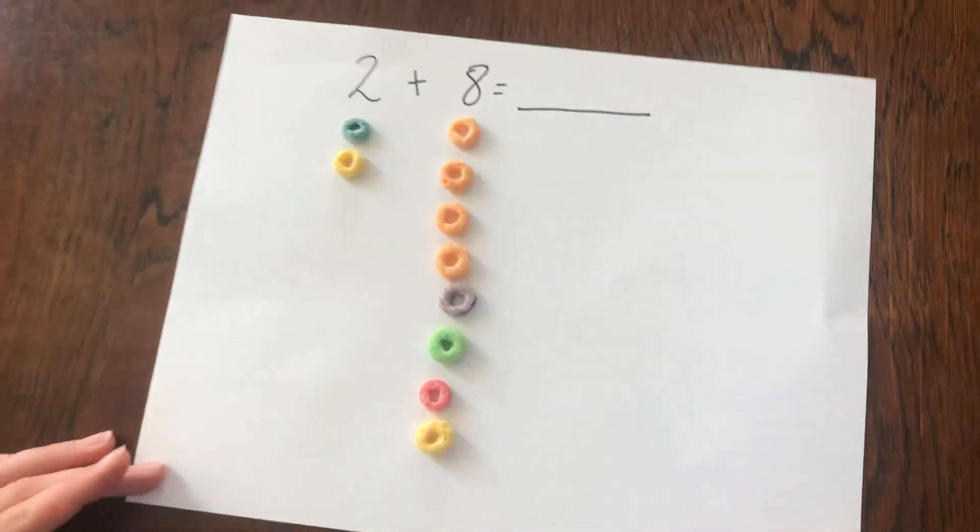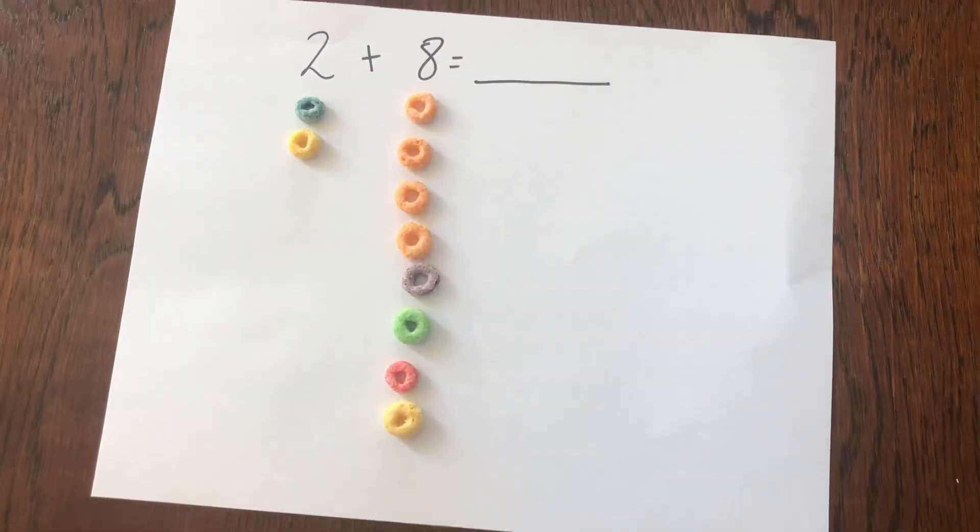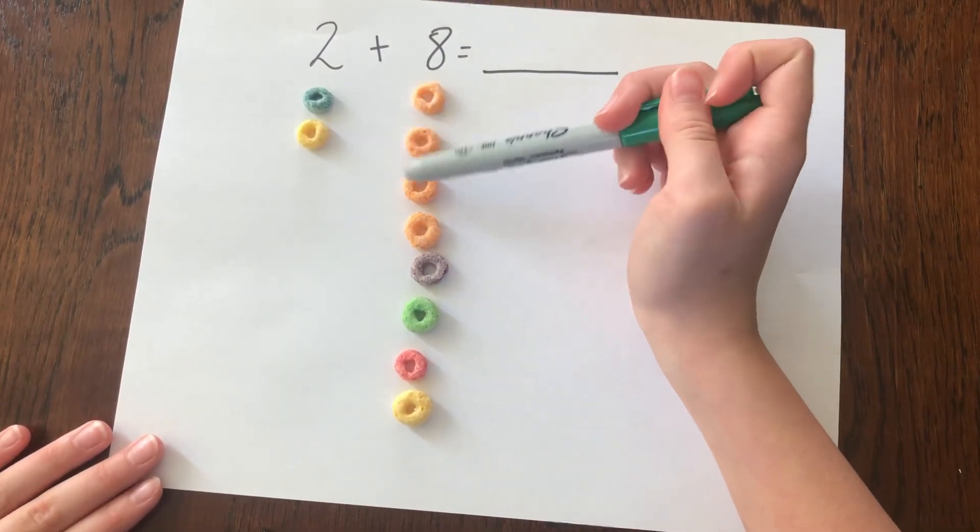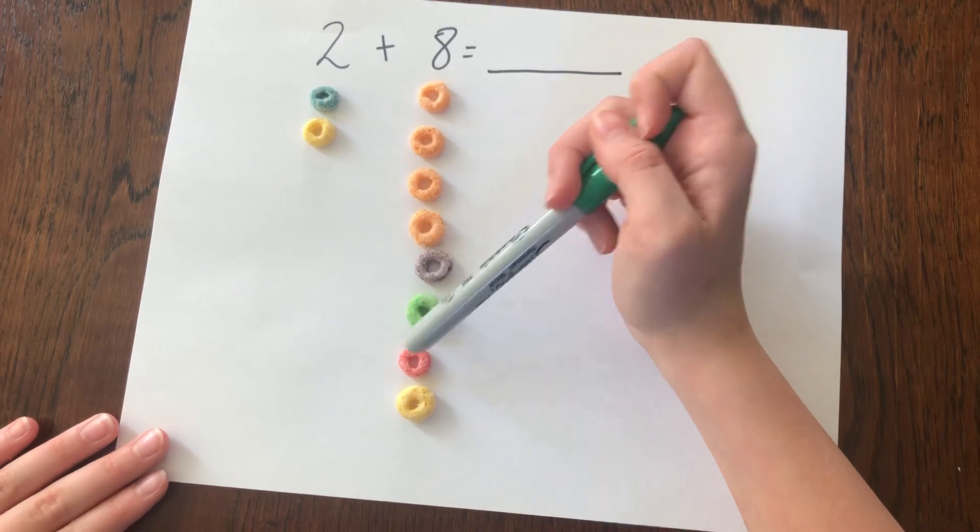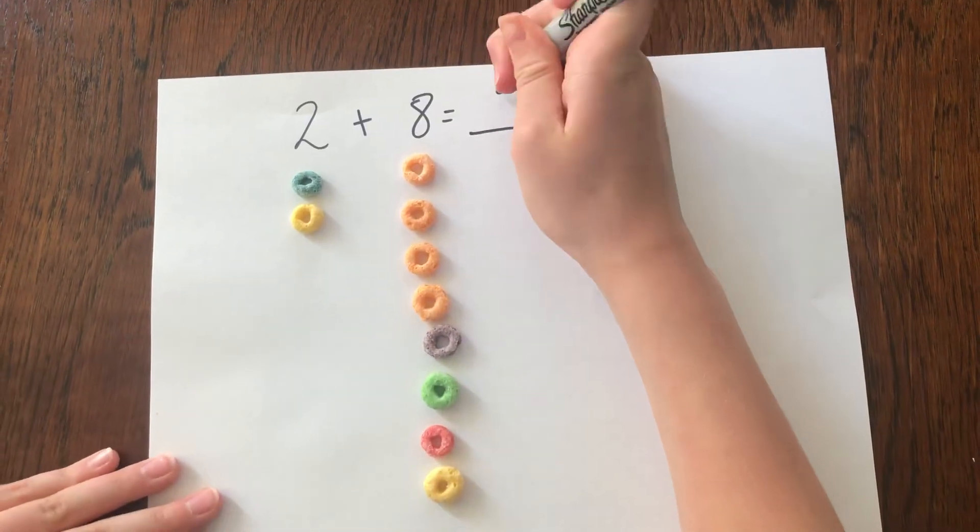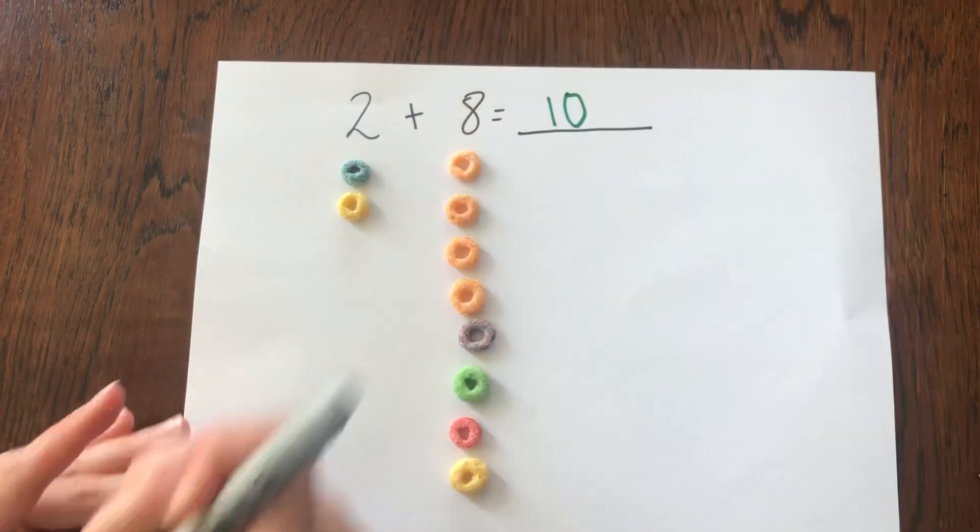Okay, so then it says addition, so now I have to add these. So if I count them, I can say 1, 2, 3, 4, 5, 6, 7, 8, 9, 10. So when we add 2 and 8, we get 10.